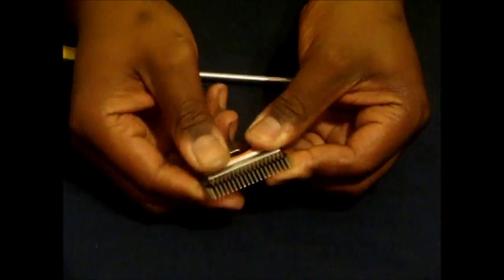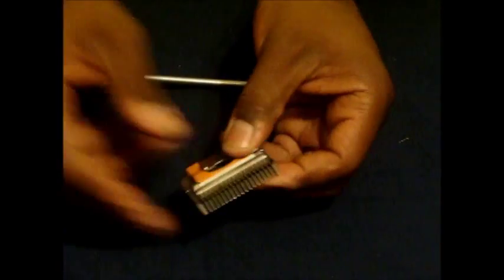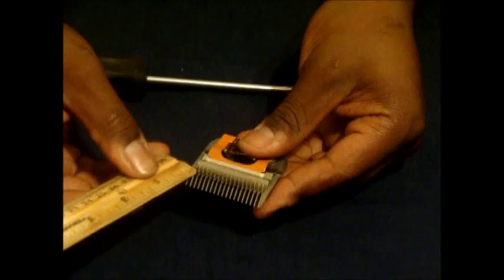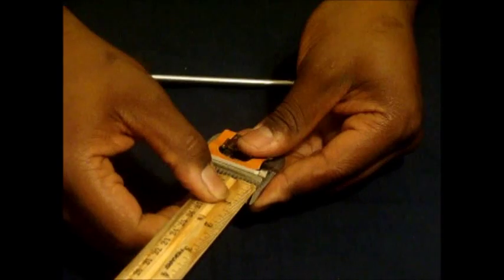Again, pull the blade all the way back. Take your ruler and make sure you have exactly the same space on both sides of your blade.